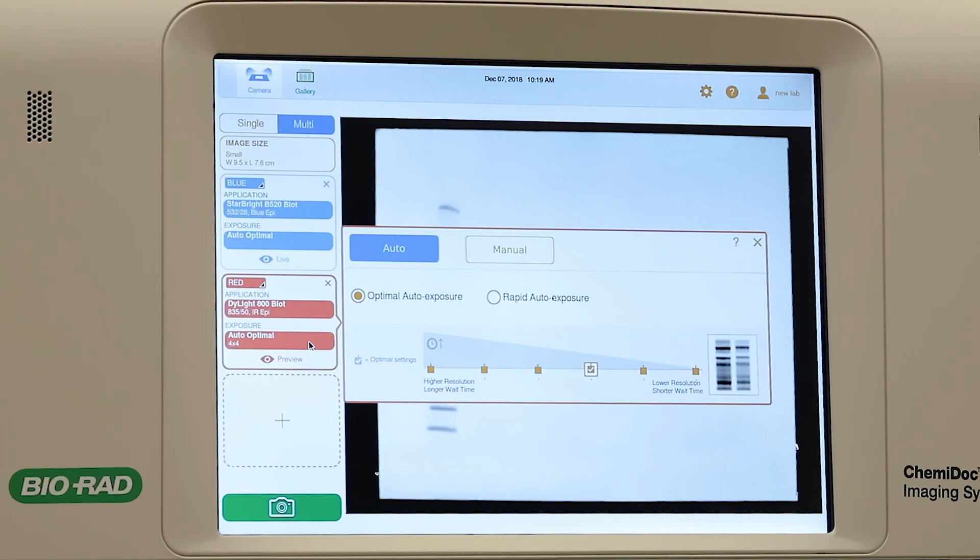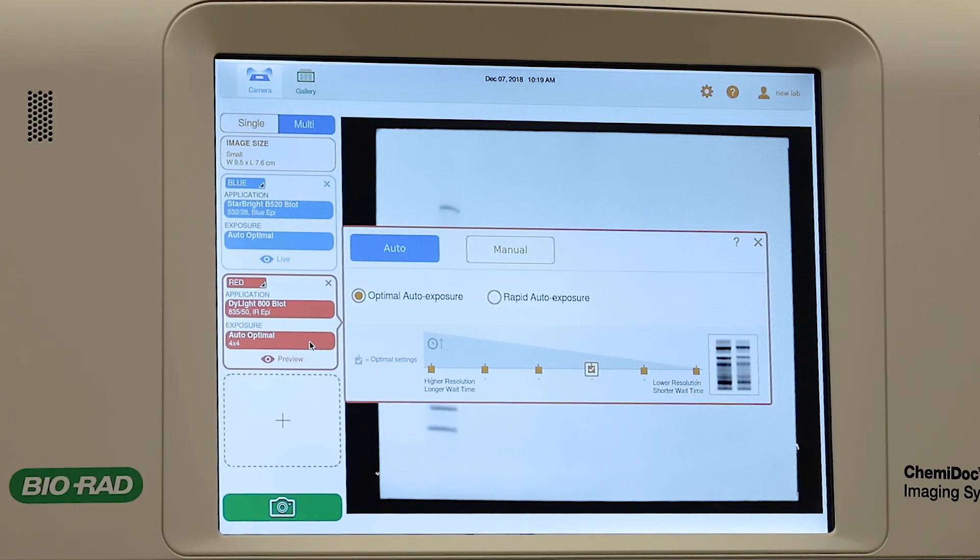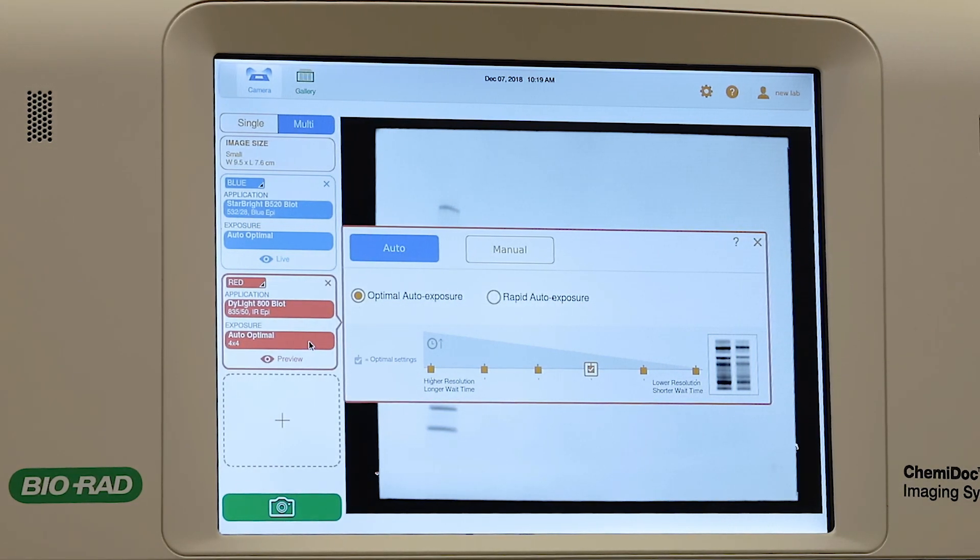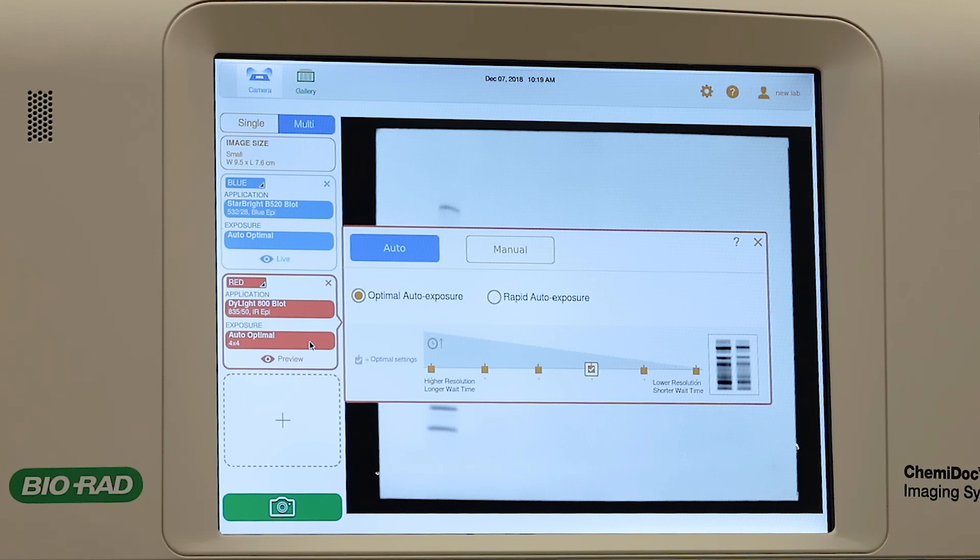Use Rapid Exposure for shorter exposure times. If you prefer, you can easily capture a single image by selecting Set Manual Exposure Time.